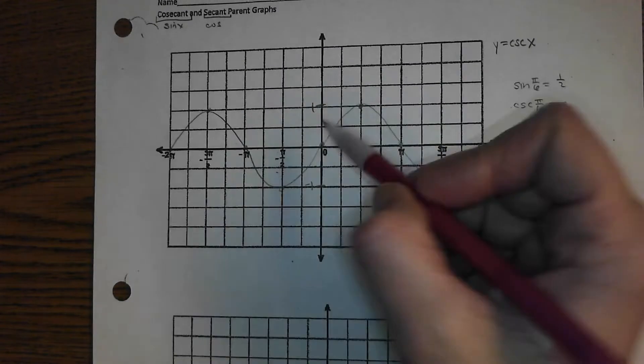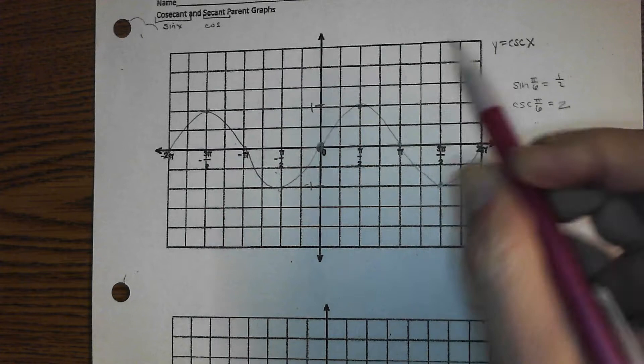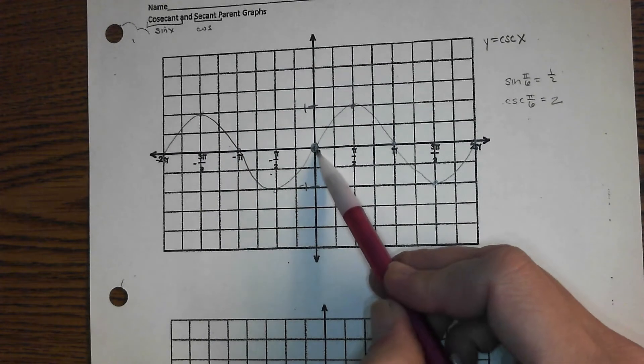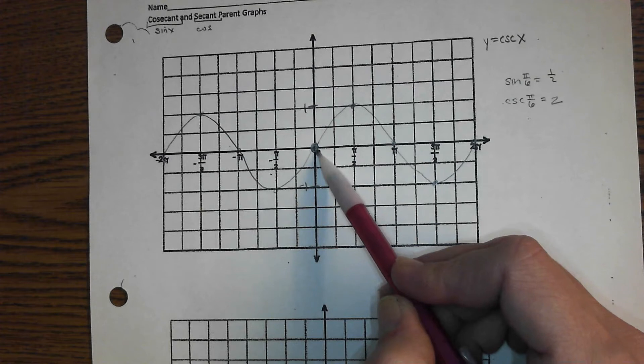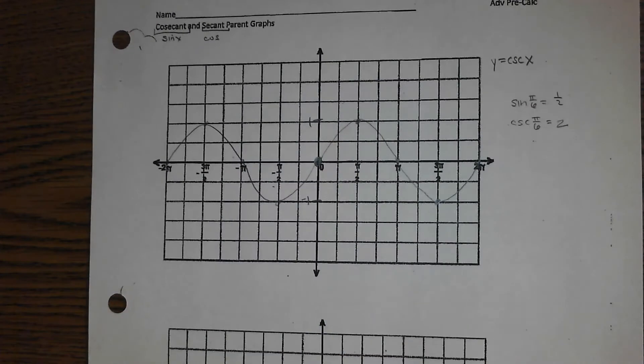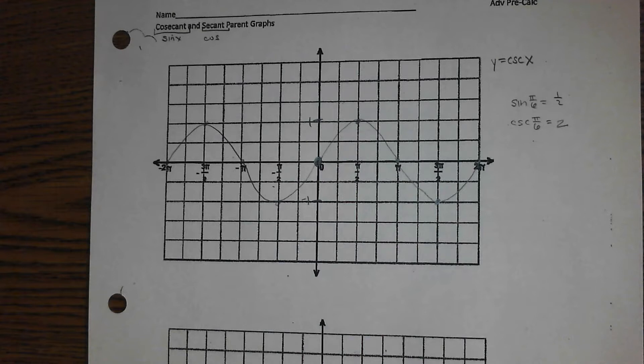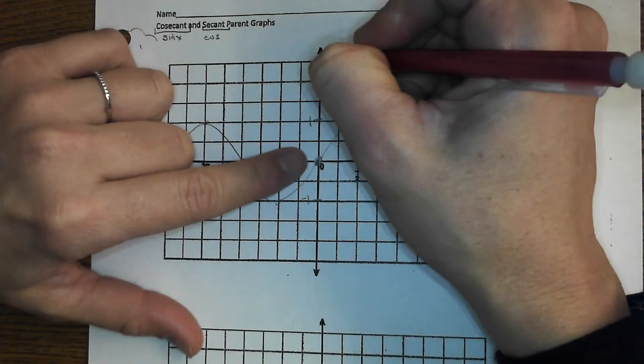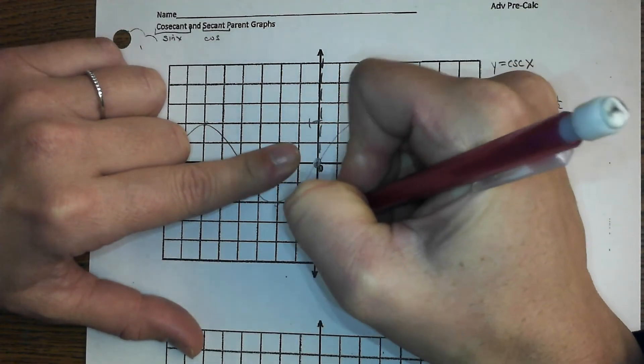So if we start with this point, which kind of started our first cycle of sine, what's the reciprocal of 0? Undefined. So just like we saw with tangent and cotangents, if you have a sine graph and you're actually trying to use it to graph the cosecant, any place where there's a 0 is going to turn into an asymptote.